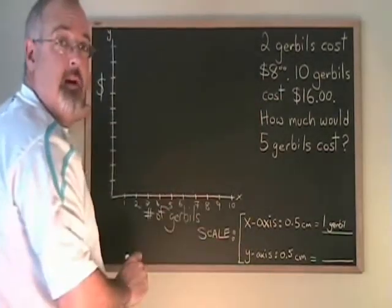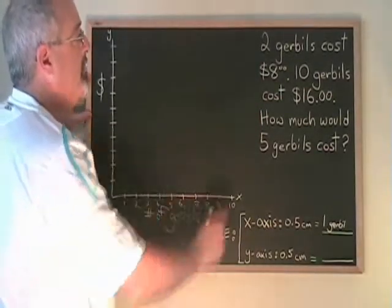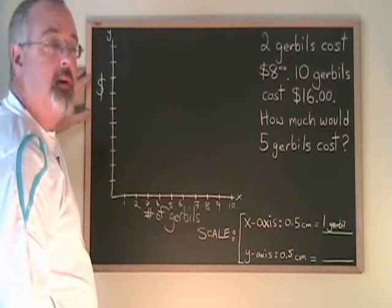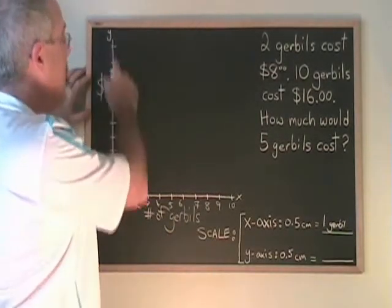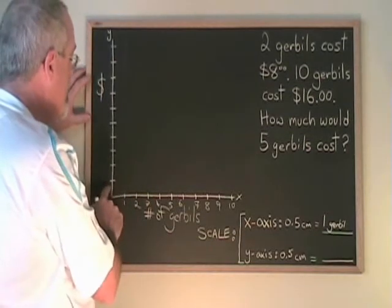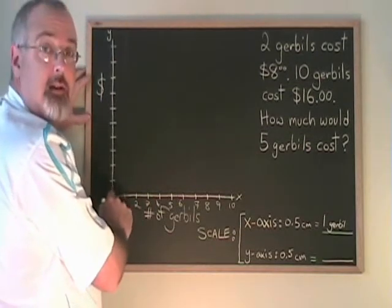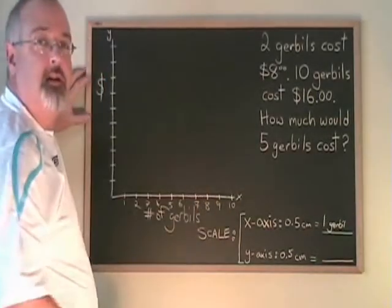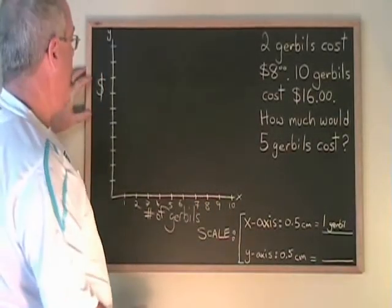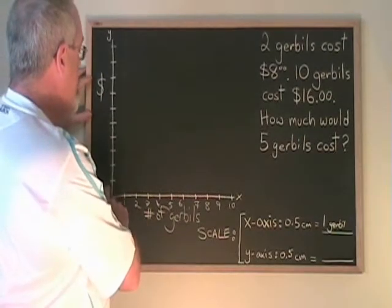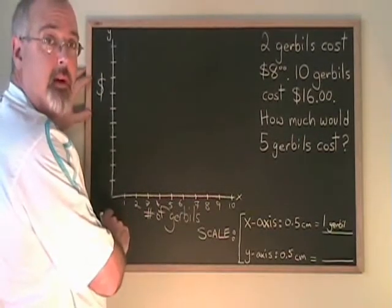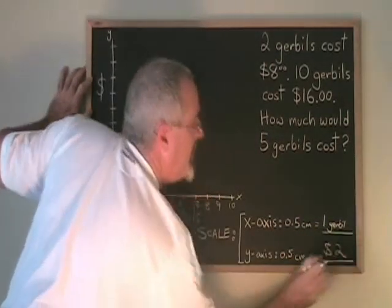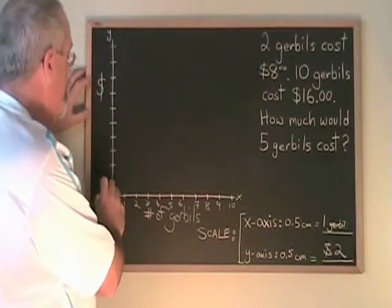10 gerbils is the largest number that I have to put on the graph. When I look at my graph paper, I see that I have 10 squares going across. So this is an easy axis to scale because I can make 0.5 centimeters, which is the width of 1 square on the graph paper, equal to 1 gerbil. And then I put the numbers along the axis.